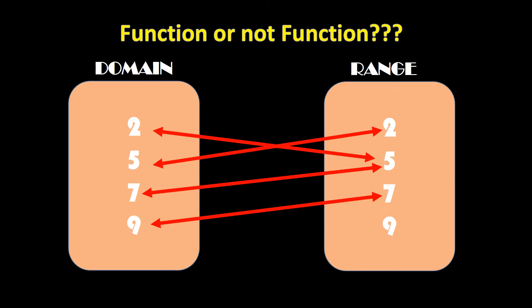Next example: examining the domain, we have 2 — it has one connector attached. Then we have 5 with one line attached — that's good. For 7, there is only one line as well — good. And then 9 has only one line. So each element has exactly one connector, which means this representation is a function.